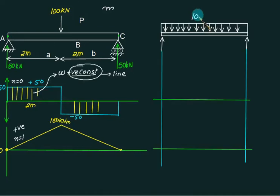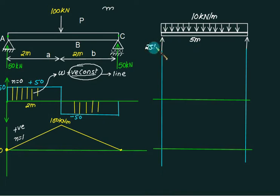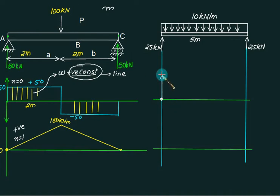Now consider a UDL of 10 kN per meter on a simply supported beam with length equal to 5 meters. Total load acting is 50 kN — again a symmetrical loading, so 25 kN and 25 kN will be the reaction on each support. In this case UDL is acting in the downward direction. For the shear force diagram, 25 kN is upward so it straight away moves upward by 25 kN because it is a point load. We have n equal to 0, so the degree will become 1 in the shear force diagram.